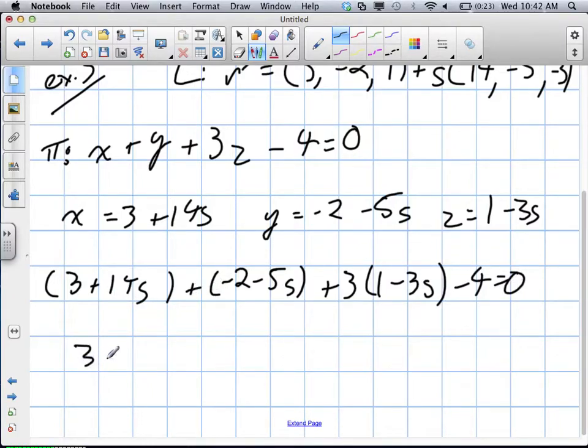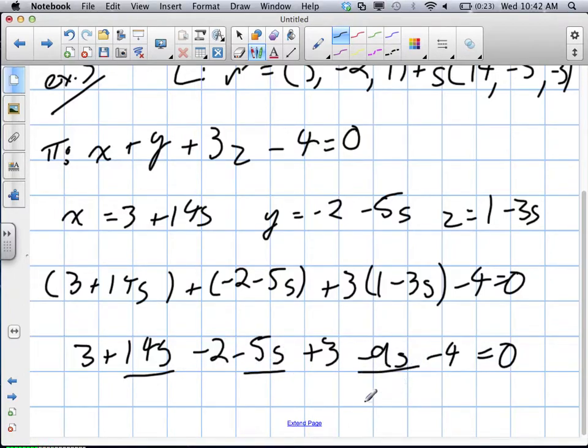Work this out. Get rid of our brackets. Then we're going to collect our like terms. So our s's we'll start with. 14 minus 5 gives us 9s, minus 9s gives us 0s. 3 minus 2 gives us 1, plus 3 gives us 4, minus 4 gives us 0 again.